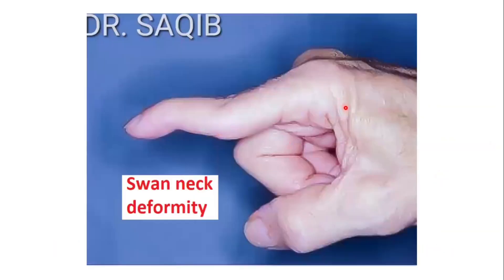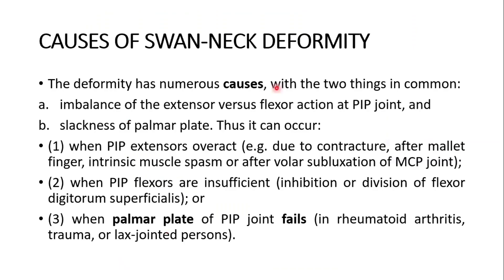This is the clinical appearance in a patient with swan neck deformity. The deformity has numerous causes with two things in common: number one, imbalance of the extensor versus flexor action at the proximal interphalangeal joint, and slackness of the palmar plate.